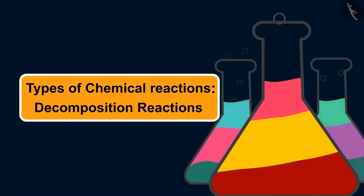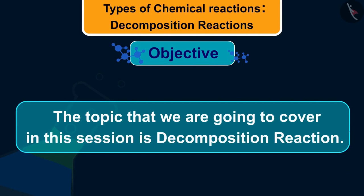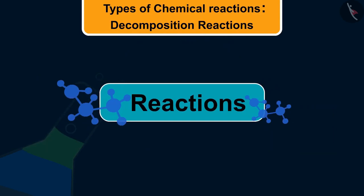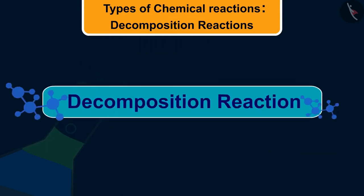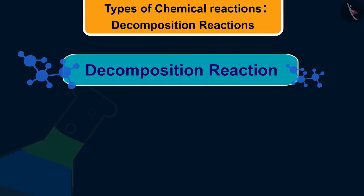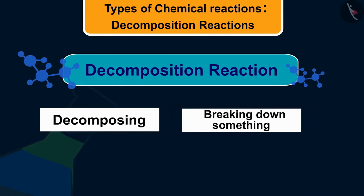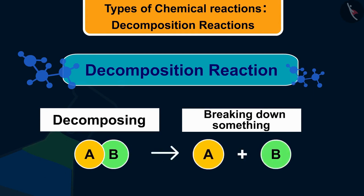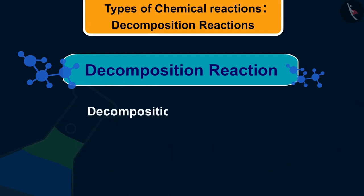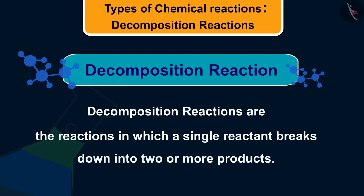Welcome to this video session. The topic that we are going to cover in this session is decomposition reaction. As you know, there are a number of types of reactions, and decomposition reaction is the type we are about to study. The word decomposition tells us that it means we are decomposing or breaking down something — breaking of a large substance into smaller substances. Decomposition reactions are the reactions in which a single reactant breaks down into two or more products.